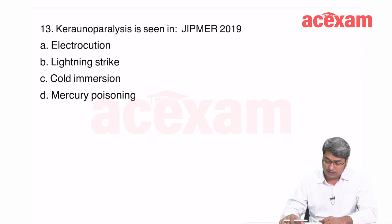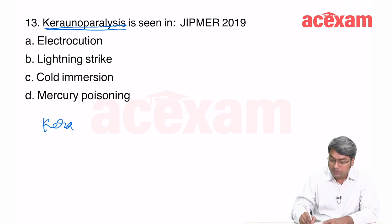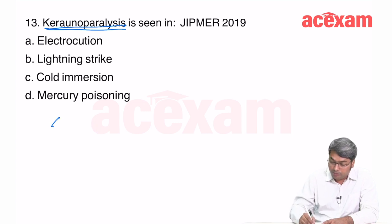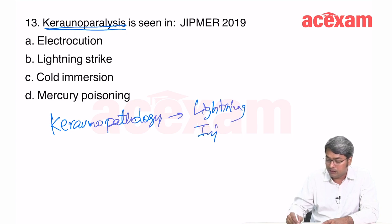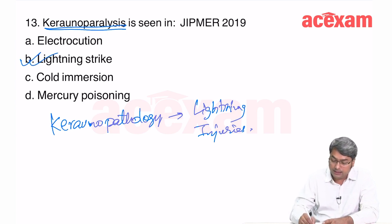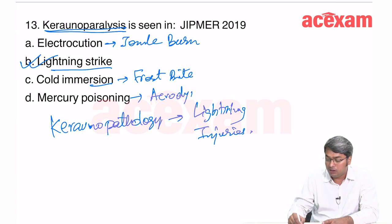Keraunopathy (keranew pathology) is a term that deals with lightning injuries — not electrocution, cold immersion, or mercury poisoning. In electrocution, we find Joule burn. In cold immersion, we find frostbite. In mercury poisoning, we find acrodynia. Keraunopathy is seen only in lightning strike injuries.